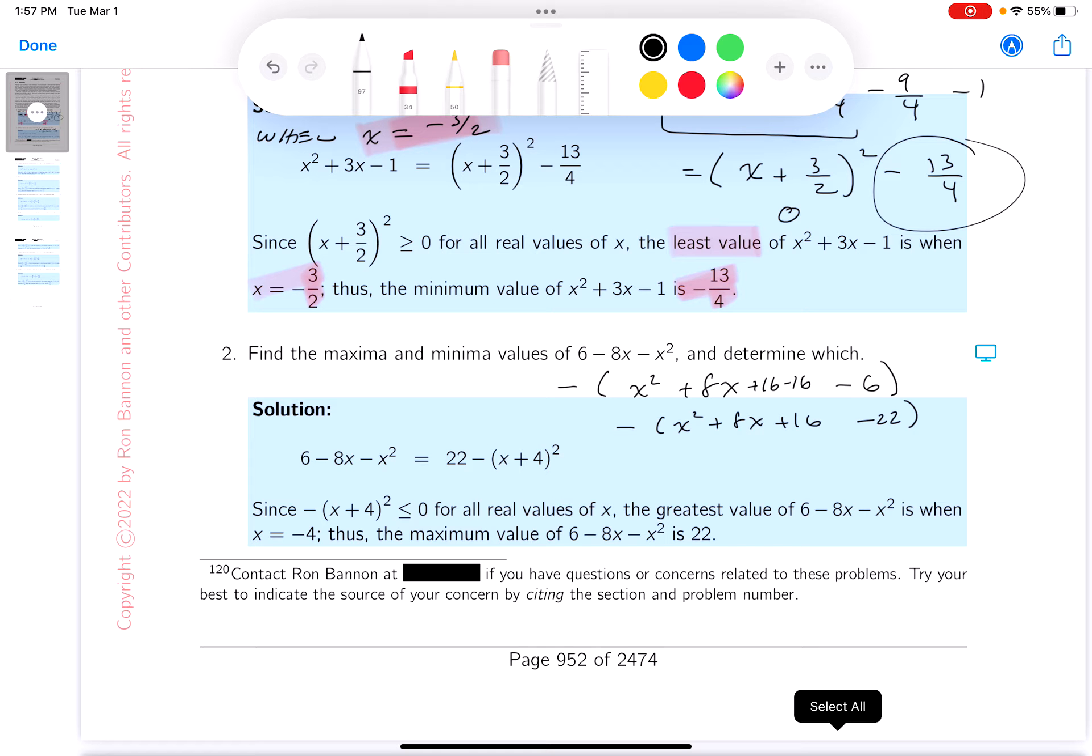All right, I'm going to rewrite it. And again, I'm continually rewriting until I see something. And I'm seeing this. What does that give me? It's a perfect square, right? That would be x plus 4 squared, and then I get plus 22.